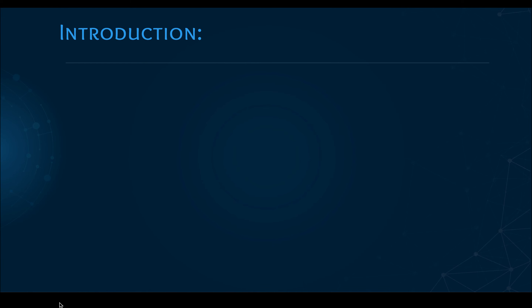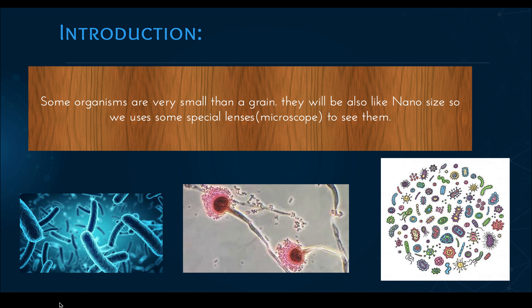When you hear the word 'micro', you think: very, very small. It is a nano size. Microorganisms are very small organisms that can only be seen through a lens — that is, a microscope. They are so minute that even on our hands right now, there are billions and billions of microorganisms living, but you are not able to see them with your naked eyes. We can see them with a microscope.